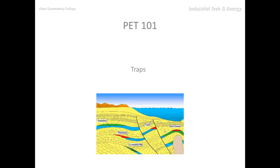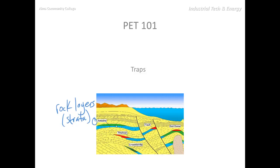Here's a depiction of a fair number of traps. Remember that rock layers — these are strata. So when I say strata or stratum, the singular, make sure you're thinking rock layers. Here's an anticline trap.